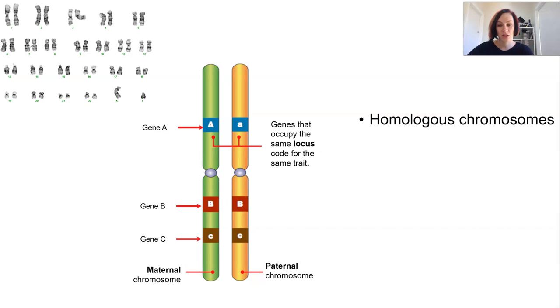They have the same sequence of genes on them in the same order. However the only difference is that one of them is inherited paternally from the father and one is inherited maternally from the mother. So we're talking from the sperm or from the egg.